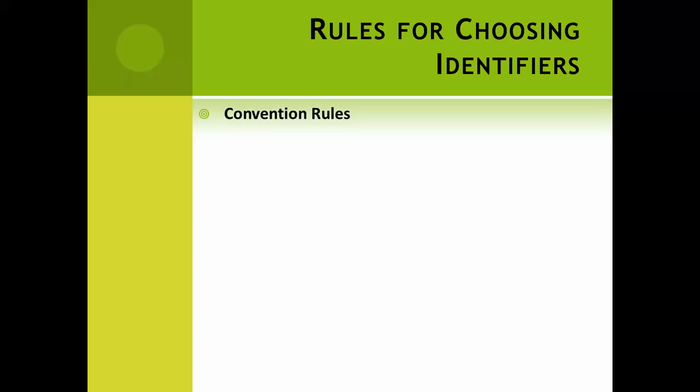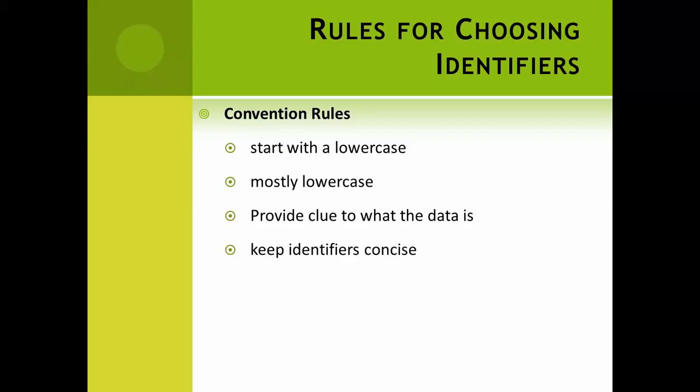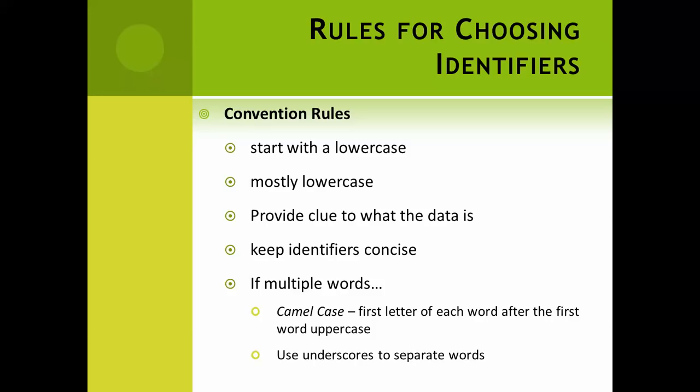The second type of rules are convention rules, which means they're not going to break your code, but they're not going to be considered stylistically correct. And they are going to result in you being point wise penalized since this is a class and we want you to get good practices with regards to style. So these rules are that you start your variable names with a lowercase letter, that the variable name is mostly lowercase. It should provide a clue to what you're actually trying to represent. So if I'm representing somebody's first name, I'll name my variable first name or fname or something like that. I want to keep my identifiers concise, which means short, because I'm going to have to type these over and over again. If it's long, that's going to introduce the potential for error. You don't want that. If there's multiple words, you have two choices. One is to use camel case, which means that you capitalize the first letter of each new word if there's multiple words. So it sort of looks like it has humps due to those uppercase letters. That's why it's called camel case. Or your other option is to separate individual words if there's more than one word with underscores.